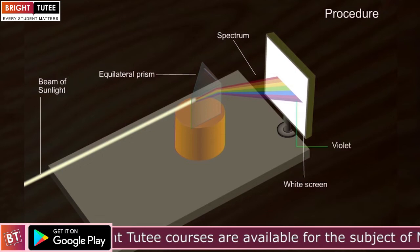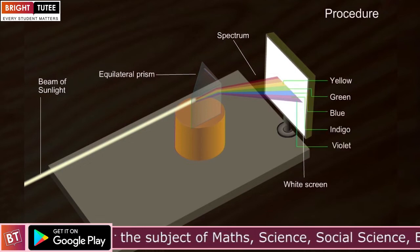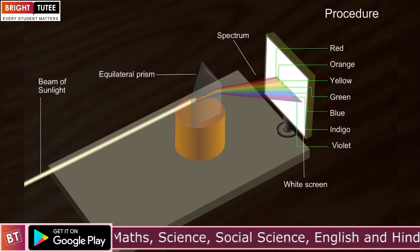And the order was from the base of the prism is violet, indigo, blue, green, yellow, orange and red.